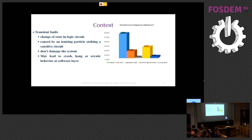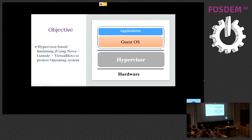In our research we chose to protect the program — specifically, the operating system. The approach we chose is to control the operating system execution through a virtual machine. This leads to an architecture where we have a hypervisor running directly on the hardware, allowing us to control the guest OS. The hypervisor we are using is a combination of Nova and Virginia software, using a virtual bus to control the operating system.